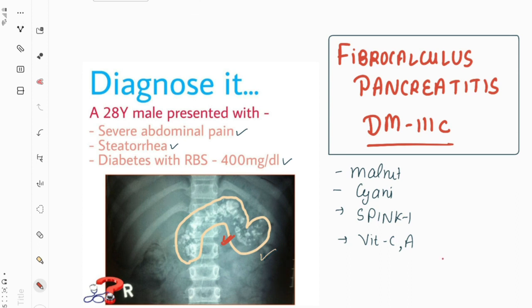Next, how do we manage this case? The management is basically surgical. Firstly, managing pain, which is quite intractable to medical management. We need to do ERCP and stenting, which leads to release of pressure and hence relieves pain. We can also do celiac ganglion block, which blocks the nerve supply to the pancreatic tissue. Other surgical options are necrosectomy and drainage procedures — one-way or two-way drains.